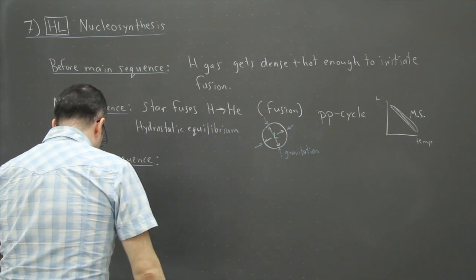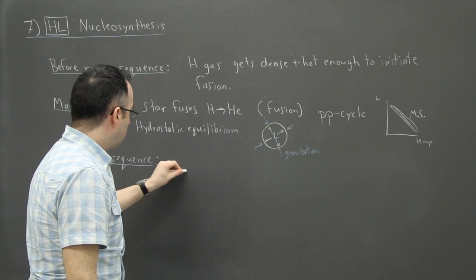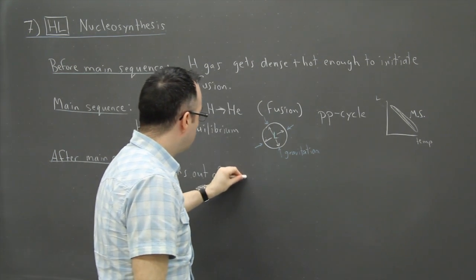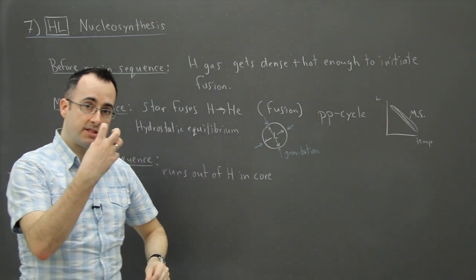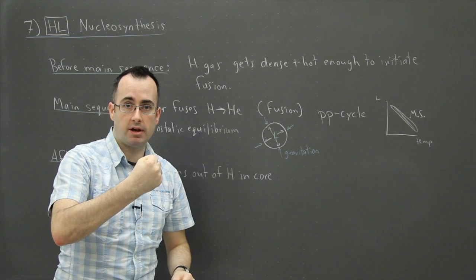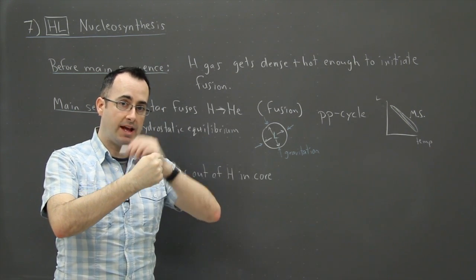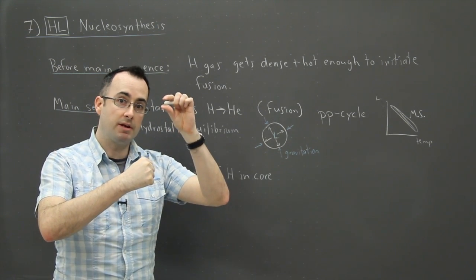But of course, at some point, it runs out. It runs out of hydrogen in the core. So within the core of the star itself, it runs out of hydrogen to burn. Now there will still be some hydrogen left over on the outsides. And that's why it can still actually burn hydrogen to helium. But it'll be in a shell.